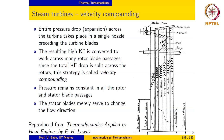As the velocity decreases, the steam expands and consequently the blade passages also increase in size, so the cross-sectional area increases correspondingly. Since the pressure remains constant across the rotor, this is an impulse stage. The stator blades merely serve to change the flow direction — there is no pressure drop and no velocity change in the stator blade passage. Because the velocity decreases in a stepwise manner, this design is called velocity compounding.